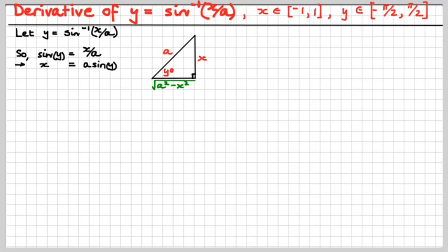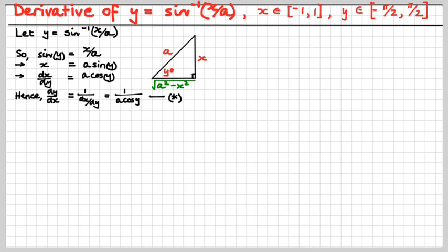dx/dy would be a cos y. Therefore, dy/dx would be 1 over dx/dy, which would be 1 over a cos y. Now, what if we wanted dy/dx in terms of x? We do want it in terms of x. So, how do you get rid of this cos y as something in terms of x?